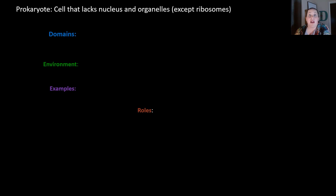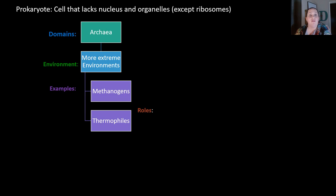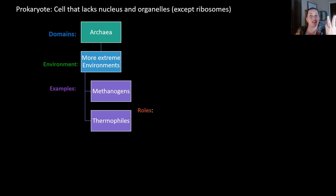Let's talk about prokaryotic cells first. When we look at prokaryotic cells, they lack a nucleus and organelles, except for ribosomes. When we look at prokaryotic cells, they come in two different domains. The first domain is the archaea. Archaea live in more extreme environments, such as extreme temperature, acid, or lack of oxygen. These would be things like methanogens and thermophiles.